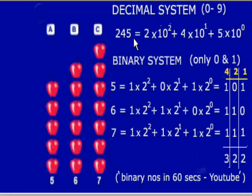Now, 245 would be represented as 2 into 10 to the power of 2 plus 4 into 10 to the power of 1 plus 5 into 10 to the power of 0. Anything raised to the power of 0 is 1, that's 245.